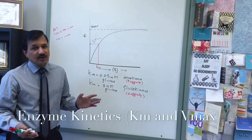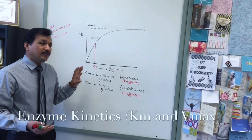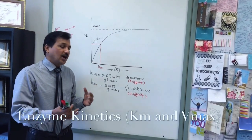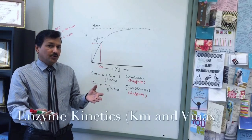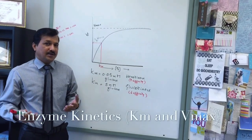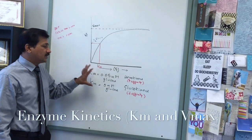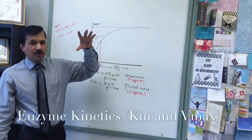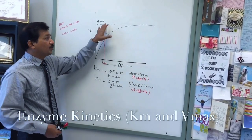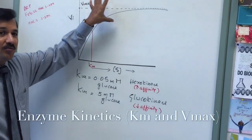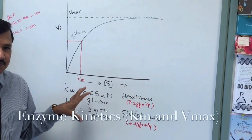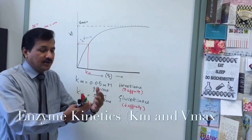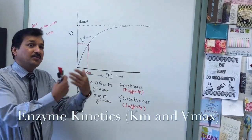KM only tells us when the enzyme is active — it doesn't say how much substrate the enzyme is going to consume. Just as I didn't say how many plates of food I am going to eat, I may eat two, three, or four plates — that's my capacity. That part comes from Vmax: Vmax tells us how much substrate is consumed by the enzyme.